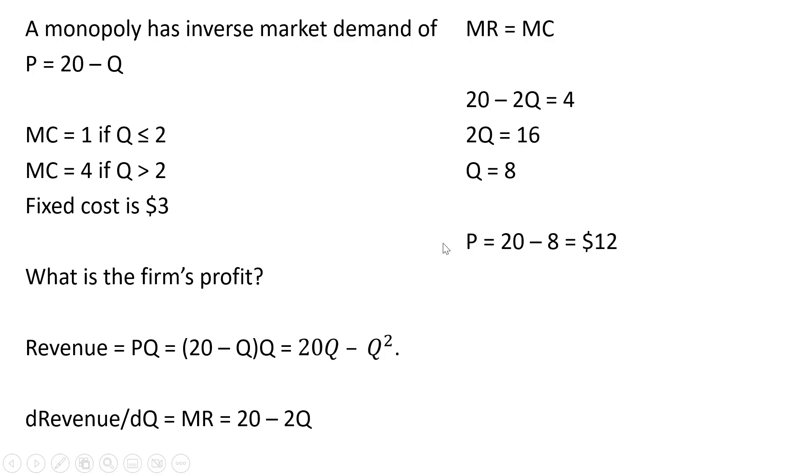Plugging this 8 back into the inverse market demand, price equals $12. The firm's total revenue, the firm's going to sell 8 units at $12 each, or $96 of total revenue.